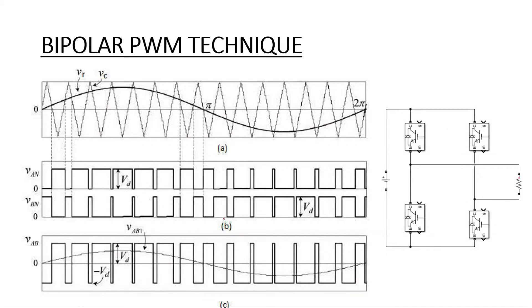Hello everyone. In this video we are going to see the bipolar PWM technique for the inverter. Basically, what is our inverter? An inverter converts DC to AC. In this bipolar PWM scheme, we are getting at output a pulse which is bipolar in nature — meaning negative is also coming. If we consider our DC input as 100V, we will get at output plus 100 and minus 100. That is why this technique is known as the bipolar technique.